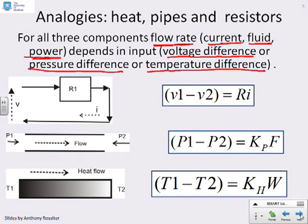If we now look at the sort of equations that we've ended up with, you'll see we've got a voltage difference. I'll just put those voltages on here, V1 and V2. So a voltage difference drives a current, and it depends on a constant R. We've got a pressure difference, drives a fluid flow, and depends on a constant Kp.